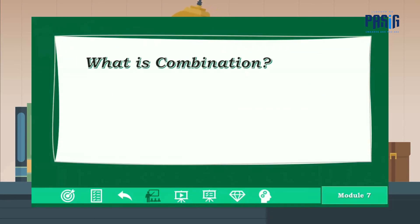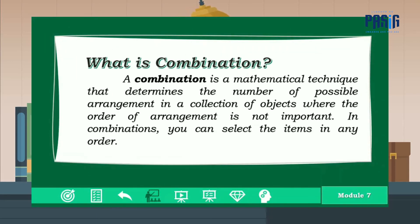Now, what is combination? A combination is a mathematical technique that determines the number of possible arrangements in a collection of objects where the order of arrangement is not important. In combinations, you can select the items in any order.